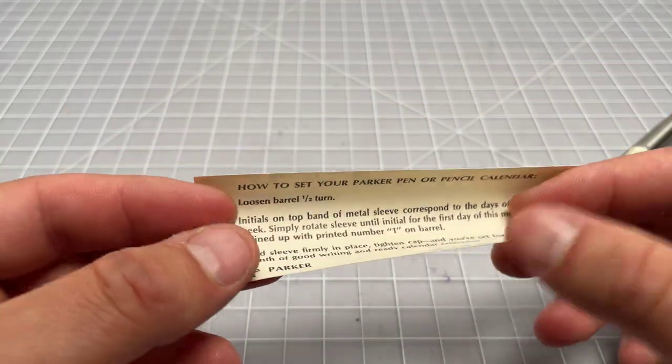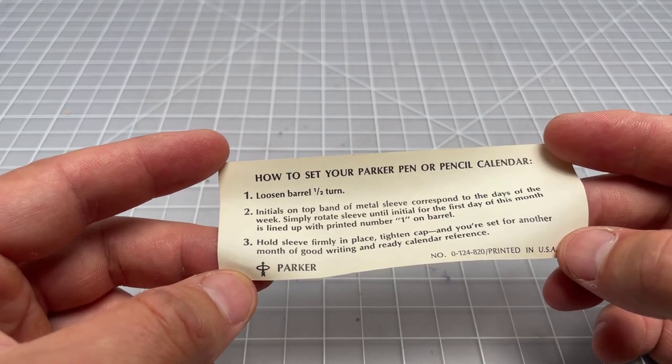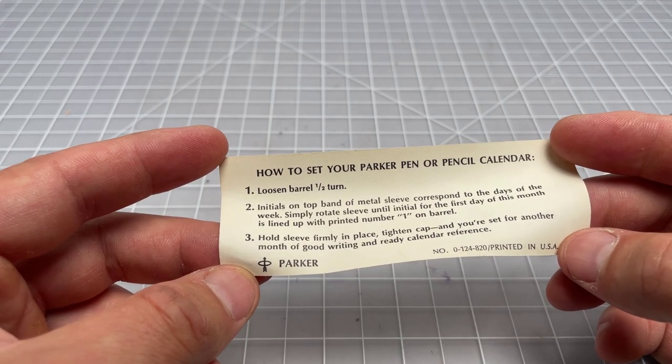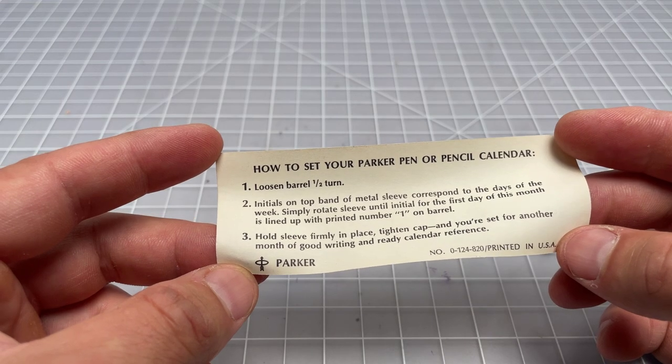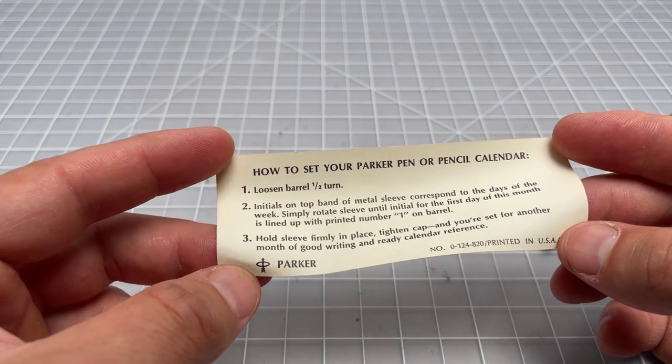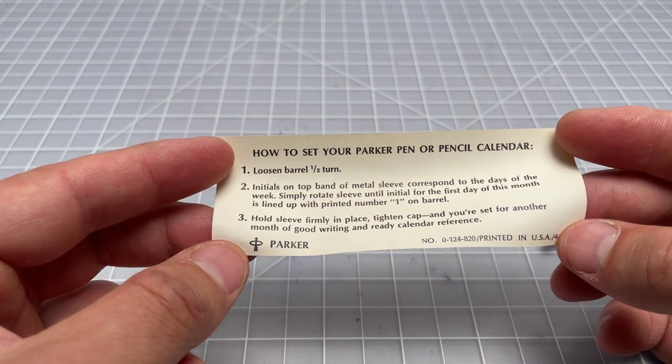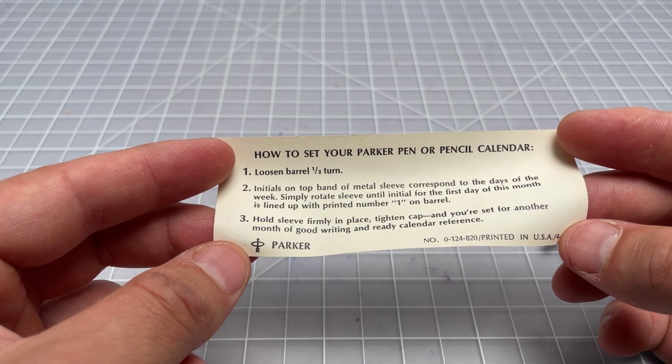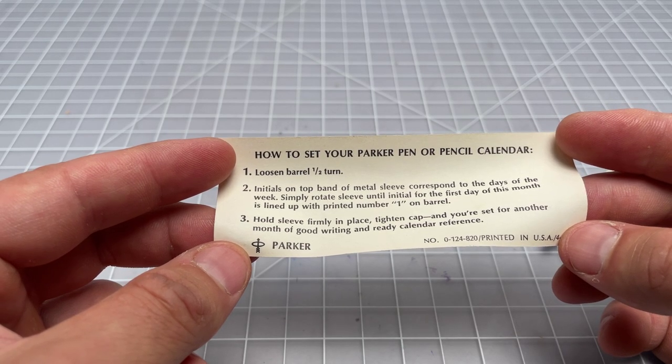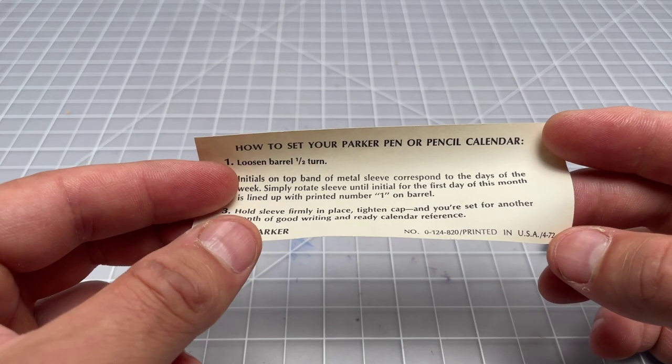And then here we have the instructions, how to set your Parker pen or pencil calendar. Loosen the barrel. Initials on the top band, the metal sleeve, correspond to the days of the week. Simply rotate the sleeve until the initial for the first day of the month is lined up with the printed number one, just as I suggested. And then hold the sleeve firmly in place, tighten the cap, and you're set for another month of good writing and ready calendar reference. This is great.